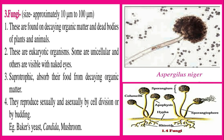3. Fungi — size approximately 10 micrometers to 100 micrometers. Characteristics: 1. These are found on decaying organic matter and dead bodies of plants and animals. 2. These are eukaryotic organisms; some are unicellular and others are visible with the naked eye. 3. Saprophytic — they absorb their food from decaying organic matter. 4. They reproduce sexually and asexually by cell division or by budding. Examples: Saccharomyces yeast, Candida, mushroom.